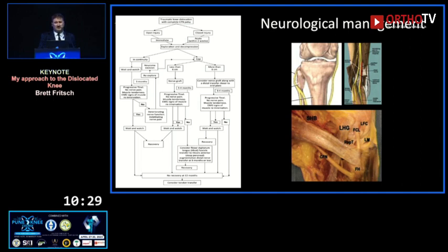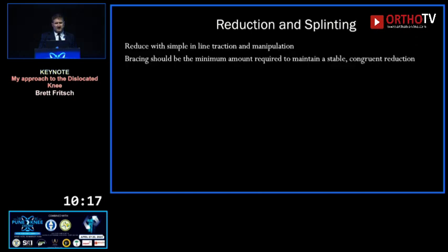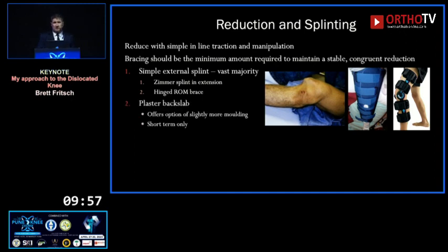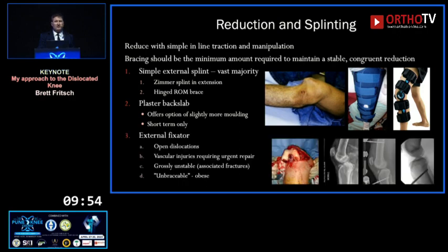As a simple surgeon, we make the algorithm simple: if the nerve is intact, neurolysis and observe; if transected and can be re-apposed, repair it; if it needs anything fancier, prepare for a tendon transfer because it's not going to work. Reduce with simple inline traction and manipulation — they don't tend to be difficult to reduce. Bracing should be the minimum amount required to maintain a stable congruent reduction: simple external splints in the vast majority, occasionally a moulded plaster backslab, and an external fixator for unbraceable knees, open dislocations, or vascular injuries needing repair.